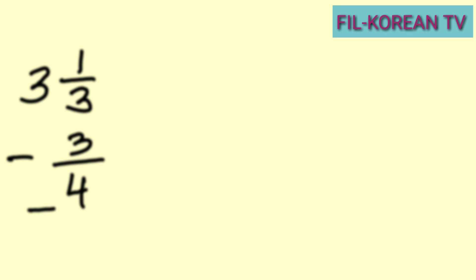Let's solve another problem. 3 and 1 third minus 3 fourths. Again, the first step is to change the dissimilar fractions to similar fractions. So let's get the LCD of 3 and 4.